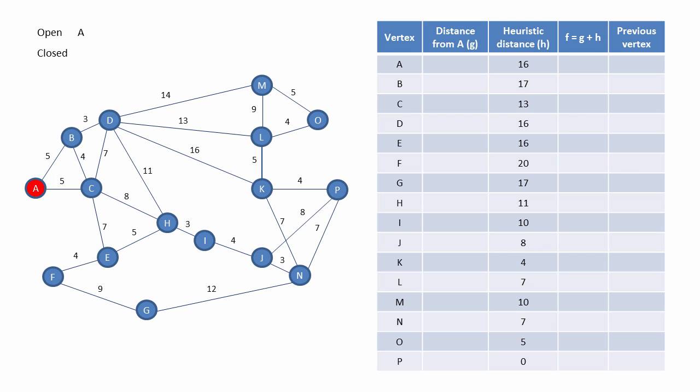We're going to maintain two lists, one of open vertices and one of closed vertices. We add our starting vertex A to the list of open vertices. Then A becomes the current vertex. And now we need to calculate its G value. The G value of a vertex is the distance we've travelled from the start to get to it. The distance of A from A is obviously zero.